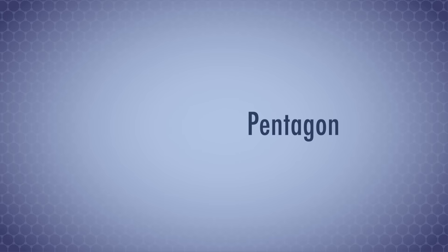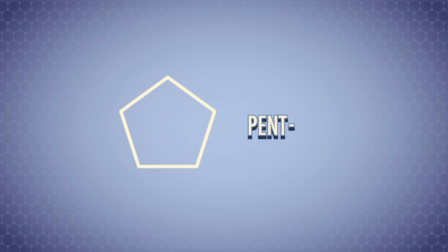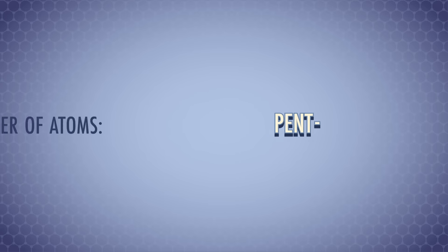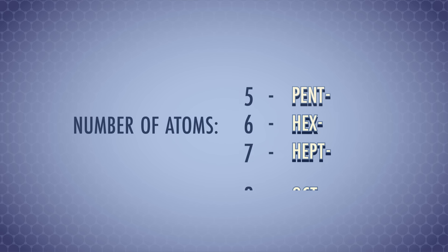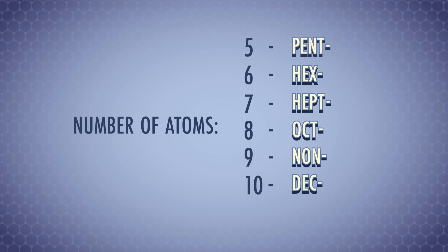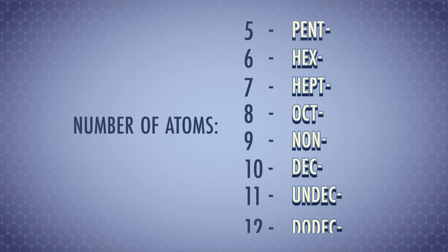For carbon chains with 5 to 12 atoms, the root names are similar to geometric shapes. For example, a pentagon in geometry is a five-sided ring, and if a carbon compound has the word "pent" as its root, then it's a 5-carbon chain. A 6-carbon chain is hex, 7 is hept, 8 is oct, 9 is non, 10 is dec, 11 is undec, and 12 is dodec. If you need a root name for a carbon chain with more than 12 atoms, there are plenty of resources out there to look them up. Chemists usually don't deal with longer chains, and there are plenty of other things to remember besides what a 56-carbon chain is called.